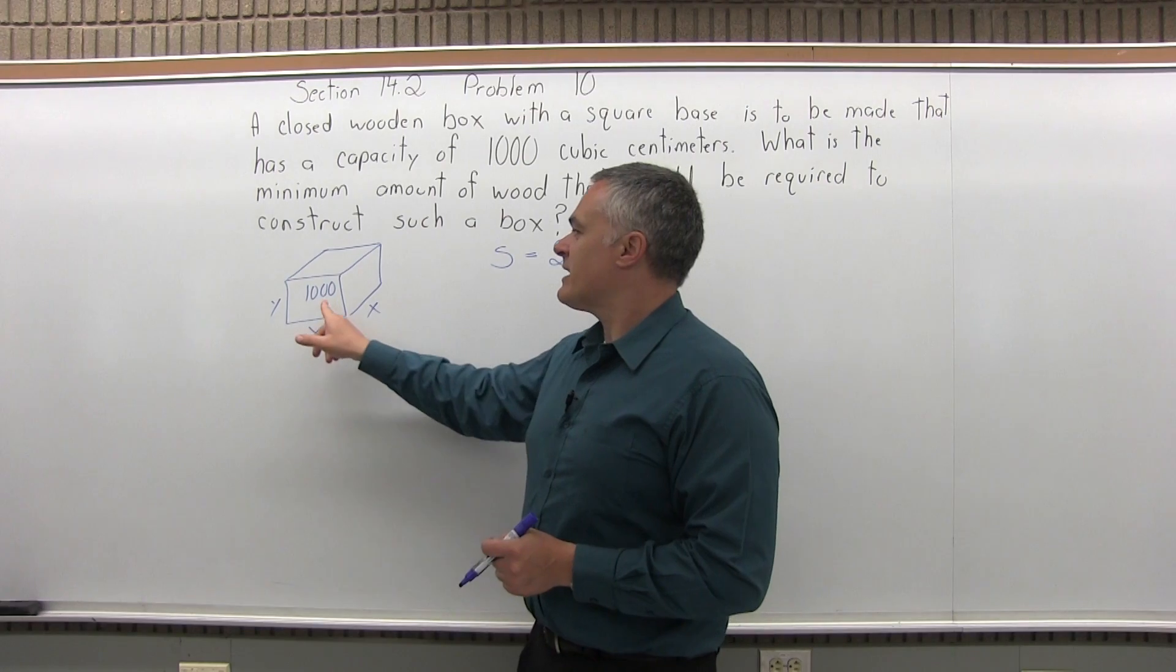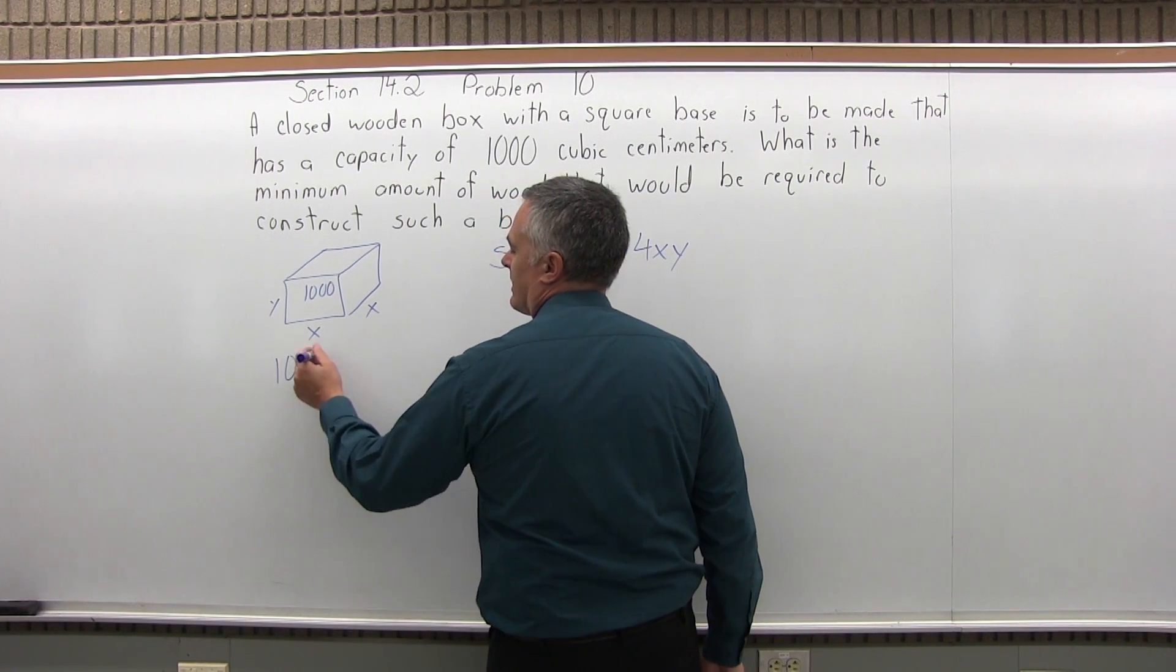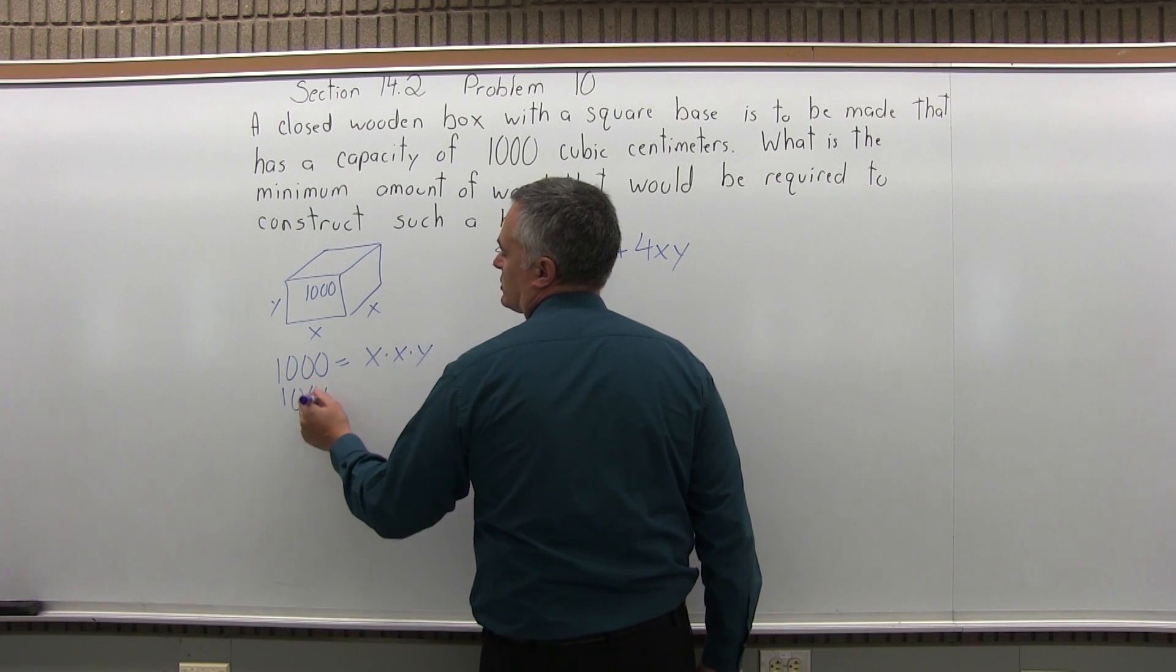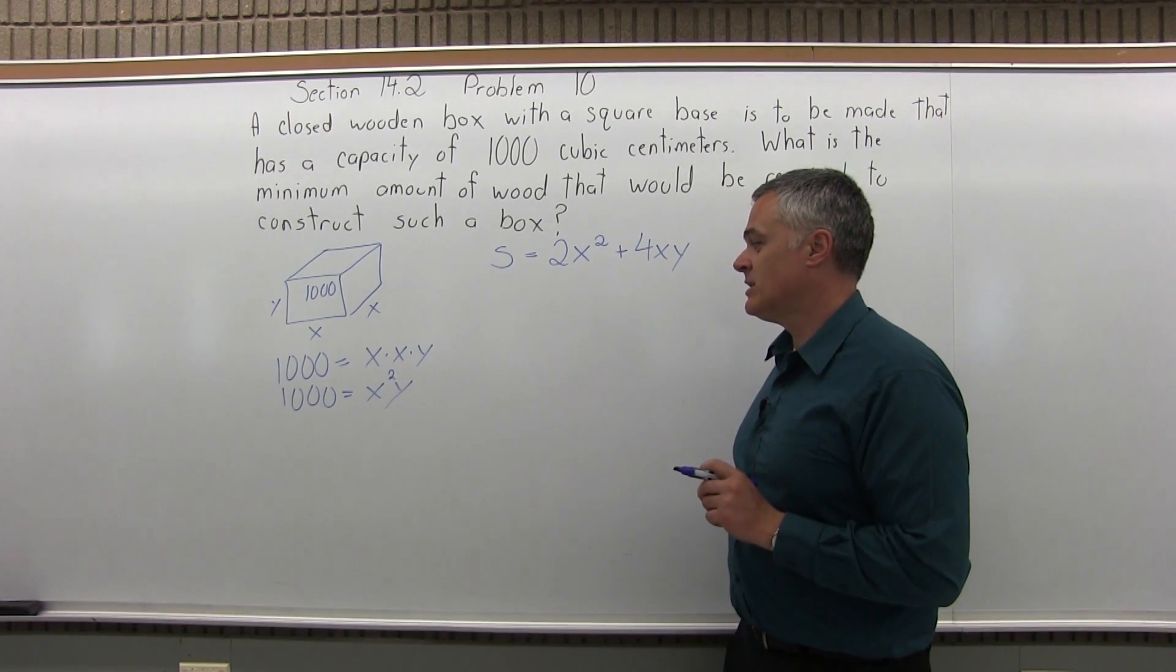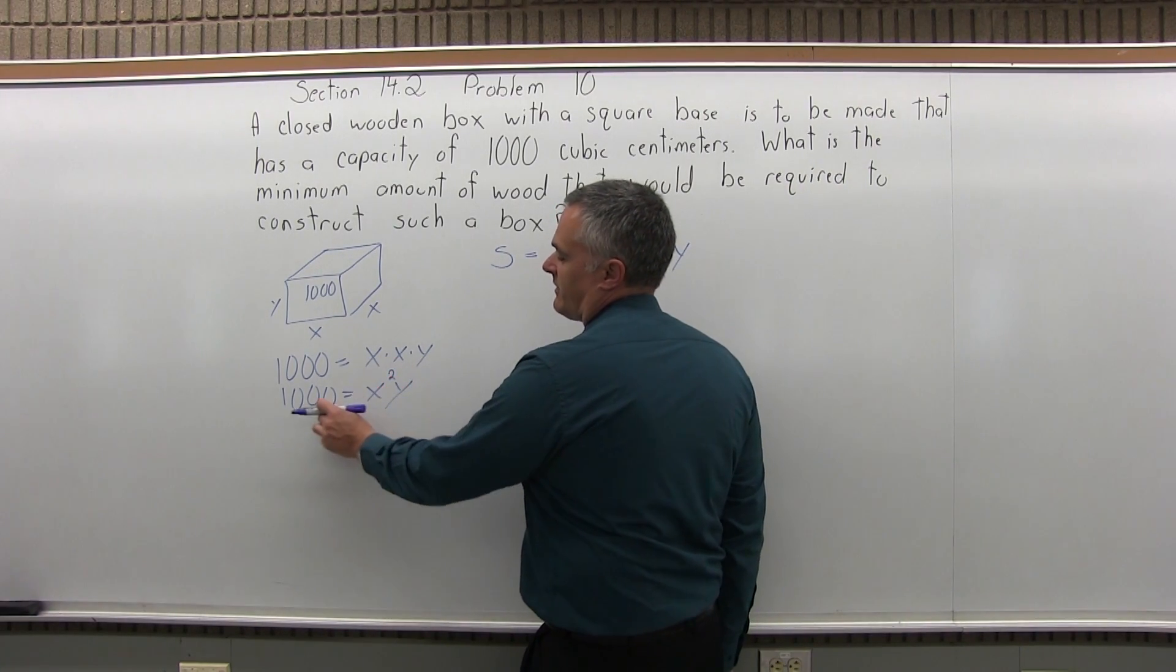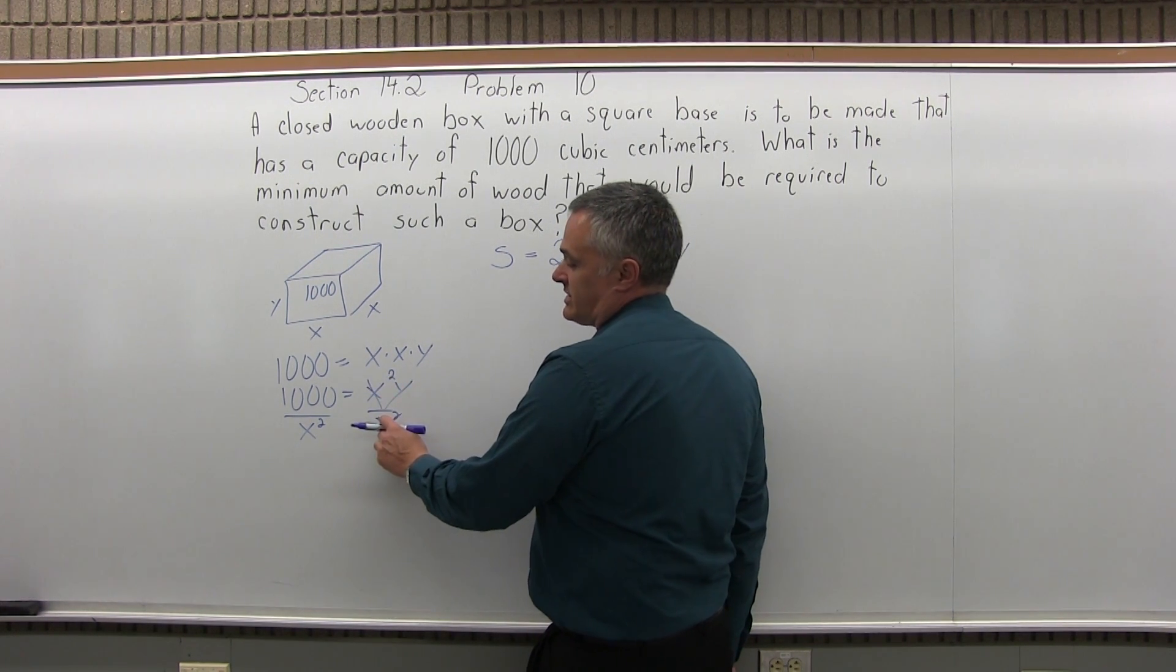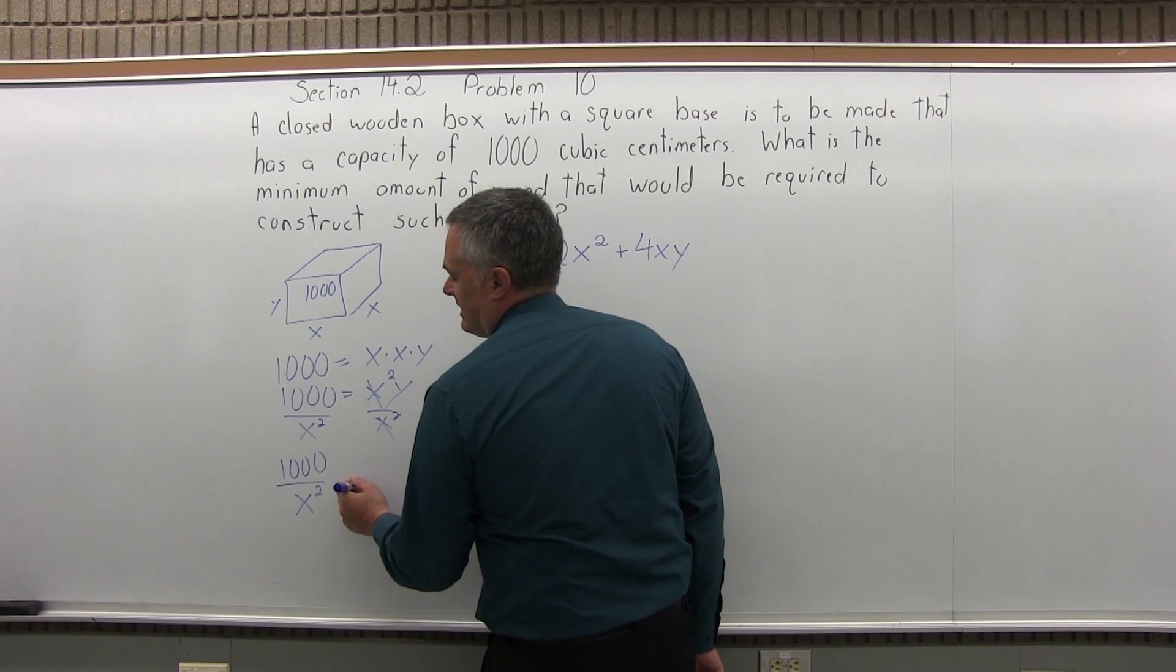Well, use the fact that it has to be a thousand cubic centimeters. So that thousand has to come from the base times the width times the height. So x times x times y, which I can simplify as x squared times y. So that's got to multiply up to a thousand. So I could solve that for x or for y, but because of the second power of my x, it's easier to solve for y. Let me divide both sides by x squared. So the part with the y, the x squared on top, x squared on the bottom just cancels. So I have 1,000 over x squared is equal to y.